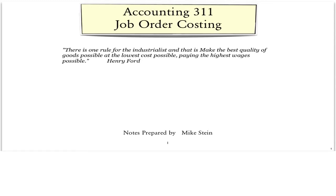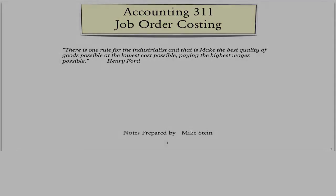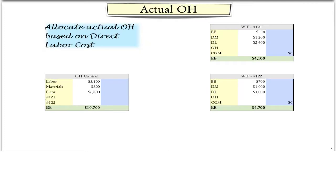In this screencast, we look at how to account for work in process inventory when the item being manufactured or the service being provided is unique and of sufficient value to justify keeping individual accounting records. Generally, the accounting for direct materials and direct labor is straightforward, and most of the attention is on the accounting for overhead. Overhead is accumulated in a temporary account, often referred to as the overhead control account. The main question is how to take the overhead costs out of the overhead control account and assign it to work in process.